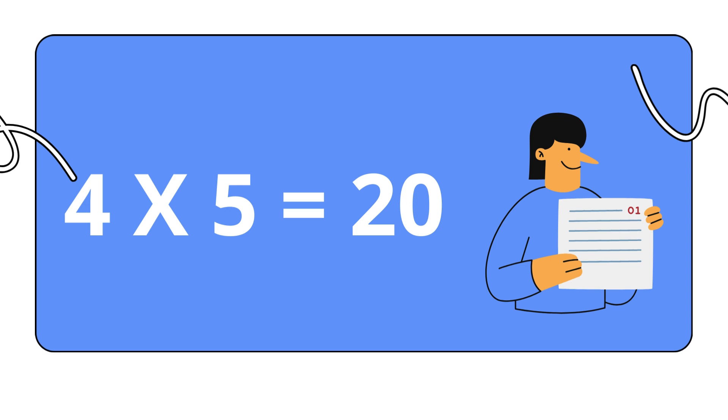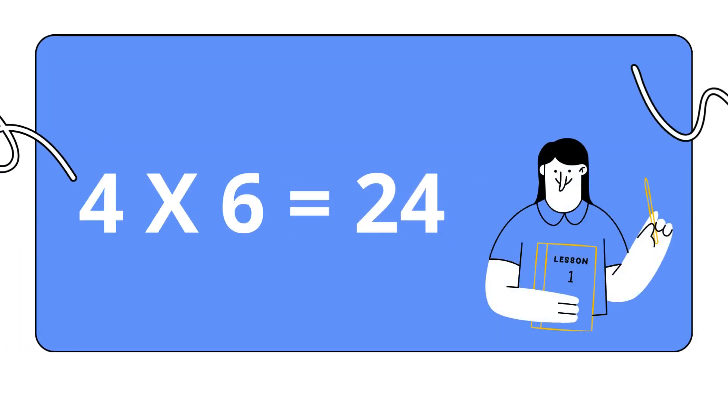Four fives are twenty. Four fives are twenty. Four sixes are twenty-four. Four sixes are twenty-four.